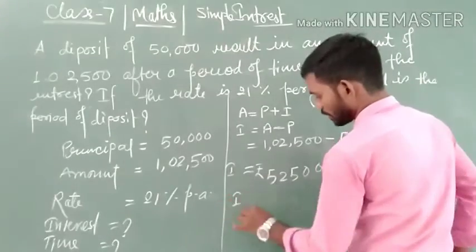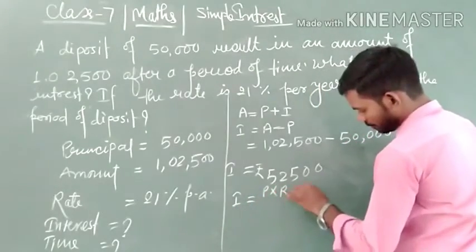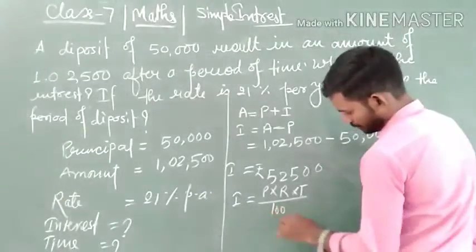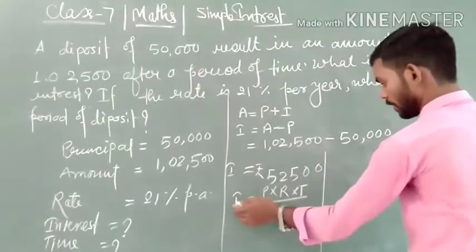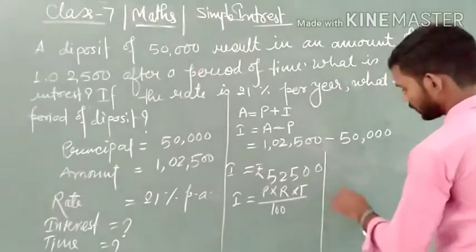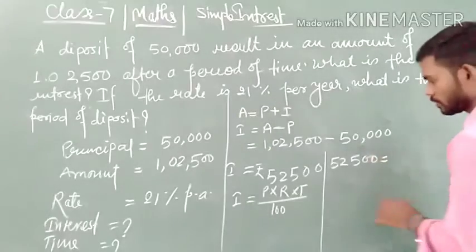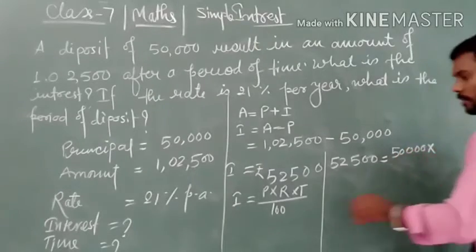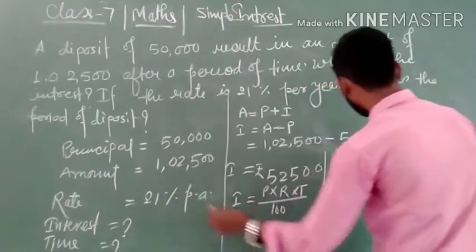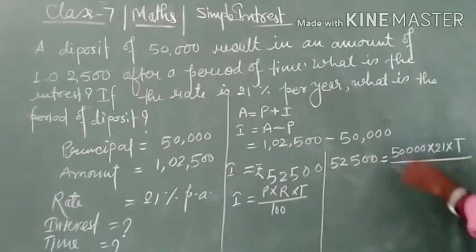Now we have to find the time. As we know, interest equals P multiplied by R multiplied by T upon 100. So we put the value: I is equal to 52,500, so we write 52,500 equals P which is 50,000, multiplied by R which is 21%, and T is unknown, upon 100.